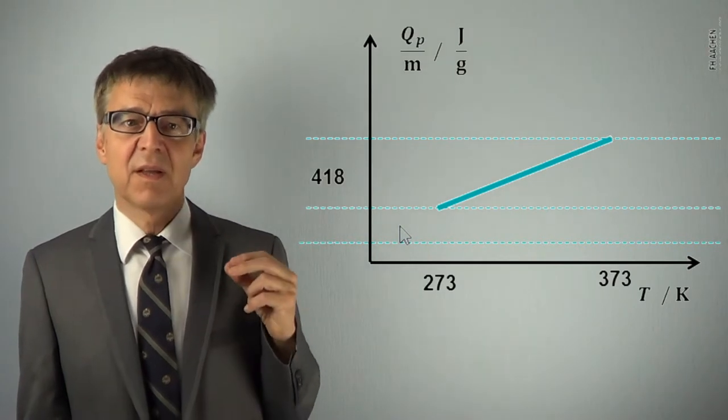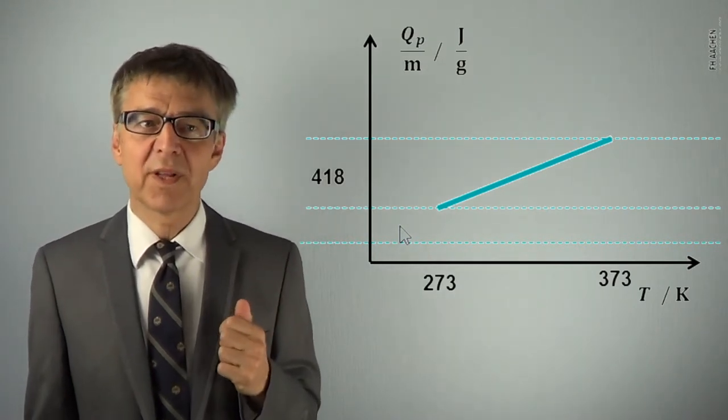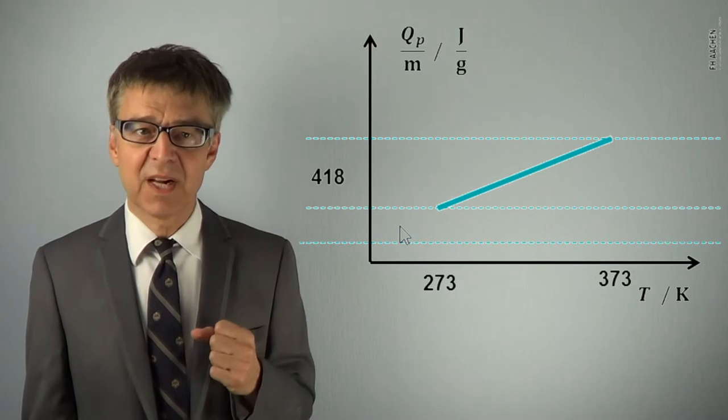That is, C is 4.18J per gram and Kelvin.